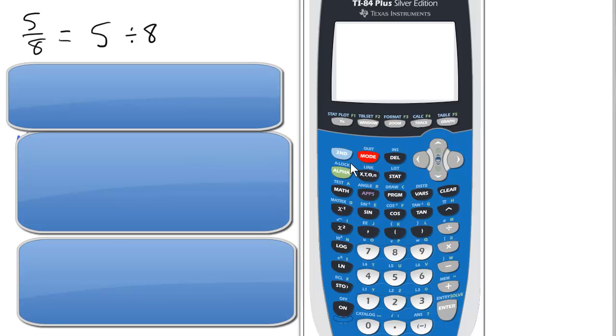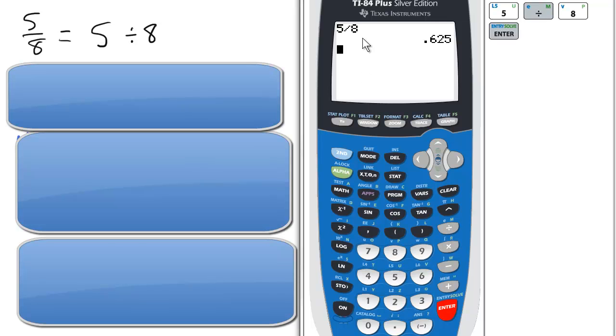Since there is no true fraction button on this calculator, if we have an example of a fraction 5 over 8, we have to enter it as 5 divided by 8 and enter. So the decimal equivalent of 5 eighths is .625.